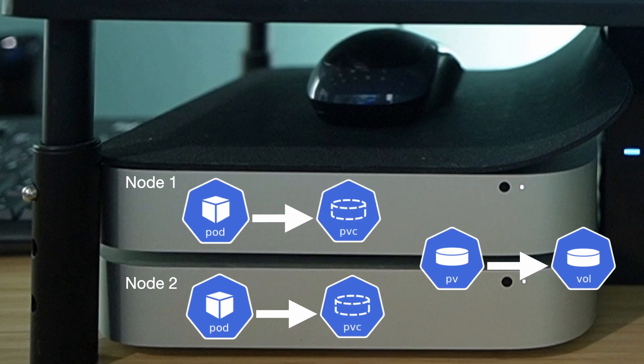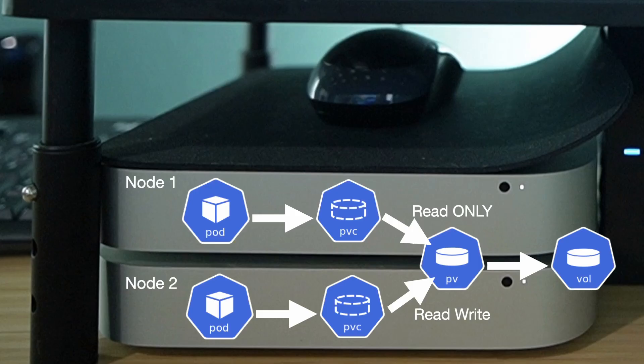A similar but slightly different problem occurs if we need to have two instances of the workload running. Kubernetes will try to start one instance on each node, and this actually makes two different problems altogether. First, you have the same unavailable volume issue. But even if you did somehow make the disk available to both workloads, the second issue is that the host path volume is read-write once — meaning only one of them has permission to write to it.